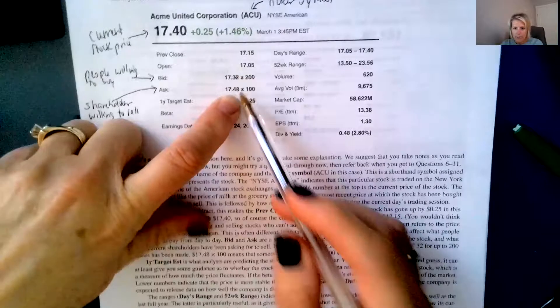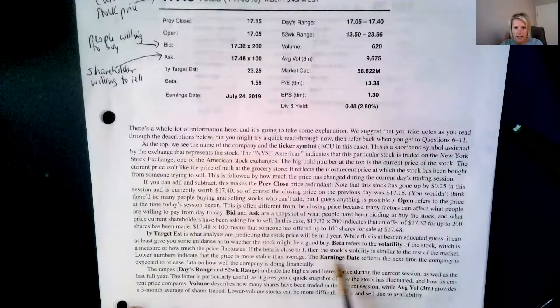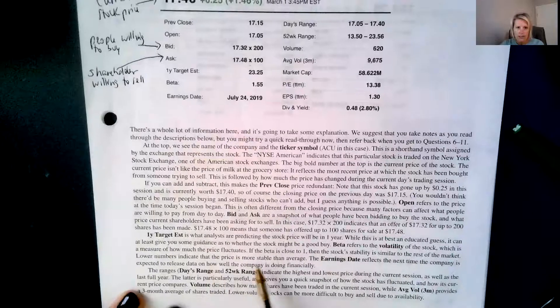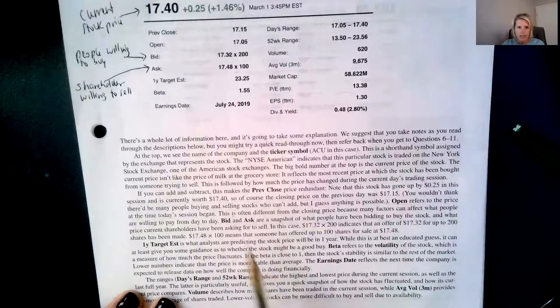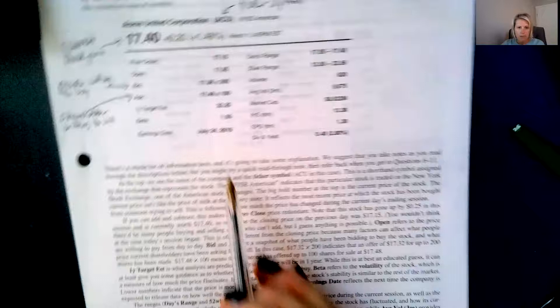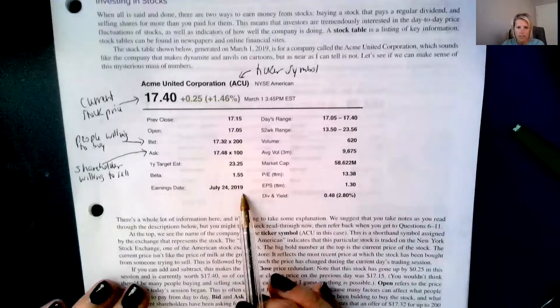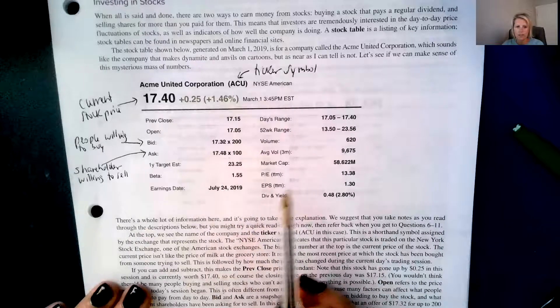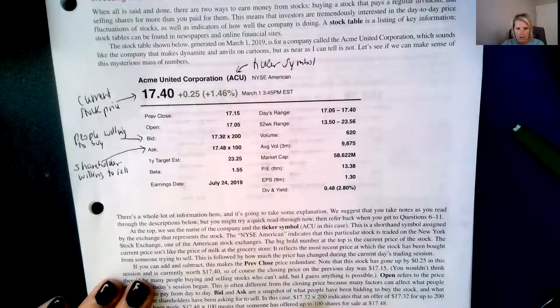The earnings date reflects the next time the company is expected to release data on how well the company is doing financially. So their earnings day is July 24, 2019. And this was taken in March, so not for a couple more months will they be actually giving out, you know, overall information how their company is doing.